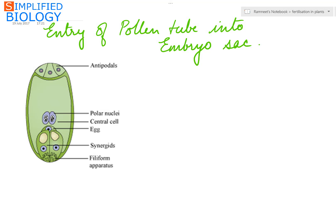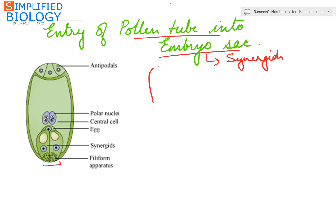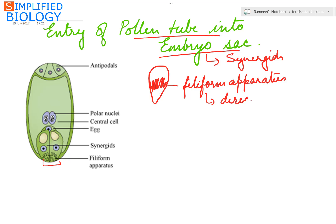After entering the micropyle, the pollen tube enters the embryo sac through the synergids present in the egg apparatus. The synergids have finger-like projections called the filiform apparatus, which direct the pollen tube towards the embryo sac and also act as shock absorbers during the entry of the pollen tube into the embryo sac.